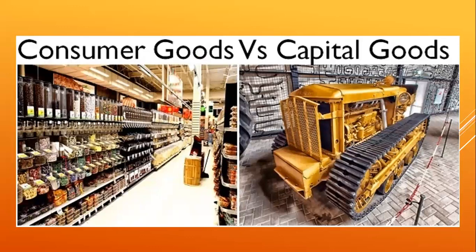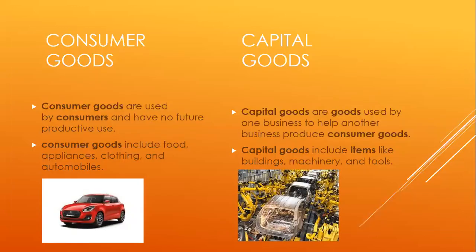When you are producing goods, remember these goods can be capital goods or consumer goods. Consumer goods are goods that have no future productive use — they are directly bought by a customer who will enjoy the final product. Capital goods are goods that help other businesses make consumer goods — like the machinery supplied in a factory, which helps produce the finished product such as a car. Consumer goods include food, appliances, clothes, and automobiles. Capital goods include items like buildings, machinery, and tools.